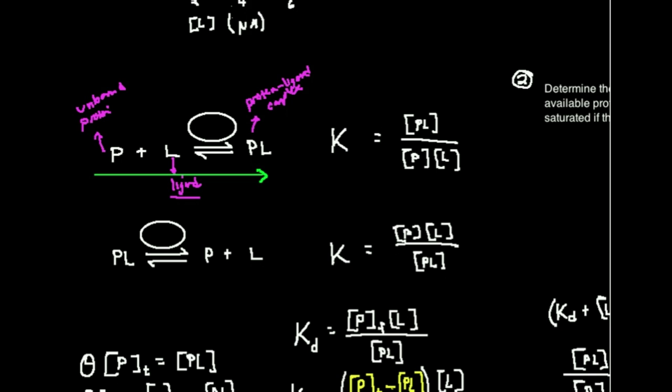Now if you think about reading this from left to right, what are these two components, protein and ligand, doing to make the protein complex? Well, they're associating together, just like your hand associates with the pencil so that you can write. So this is actually what we call an association constant. This is actually K_A.